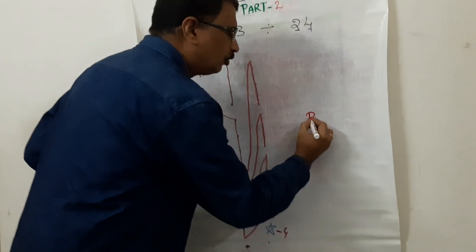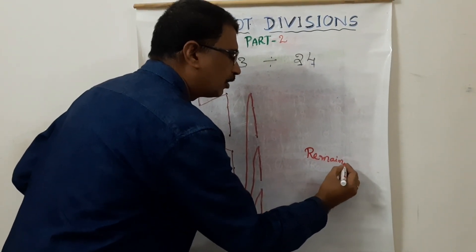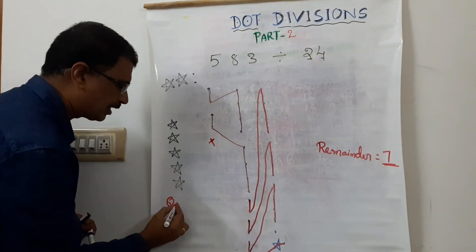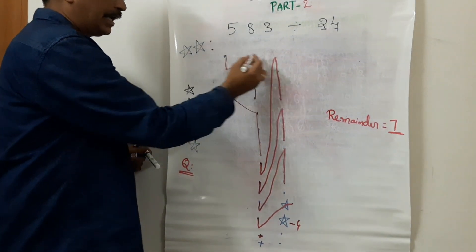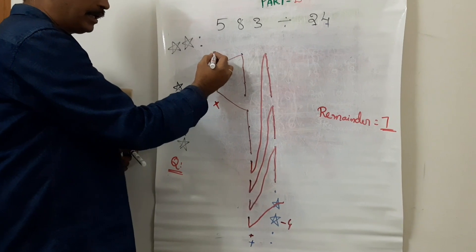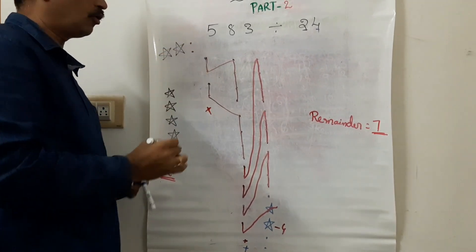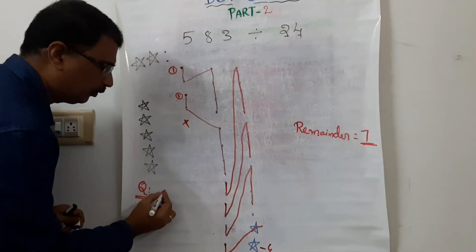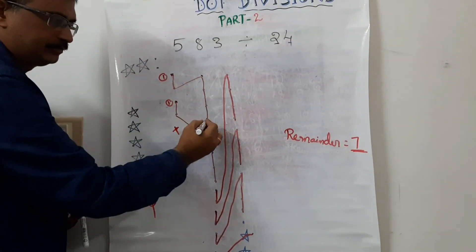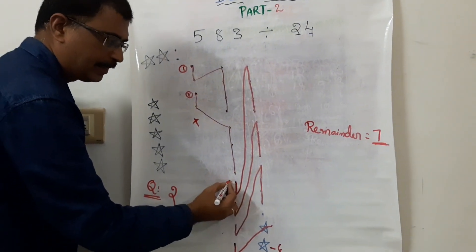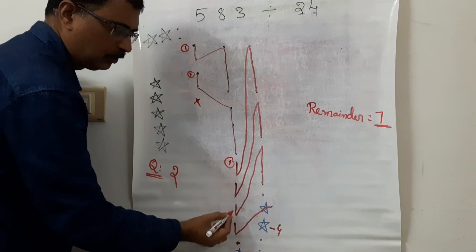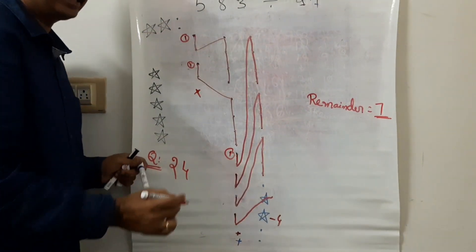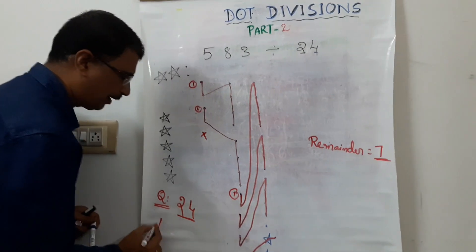This is the remainder — 7 dots are the same. This is the quotient. This is very simple. The 100th place starting dot count begins at 1. One plus 1 is 2. Next, starting count: 2, 3, 4, 4. So the quotient is 24, remainder 7.